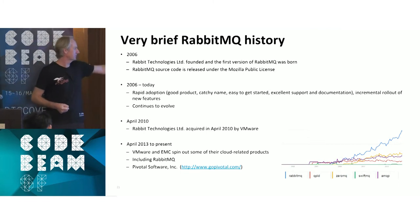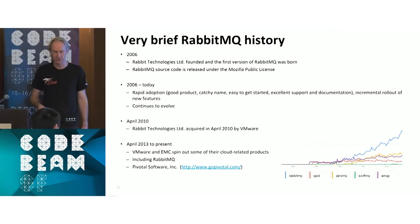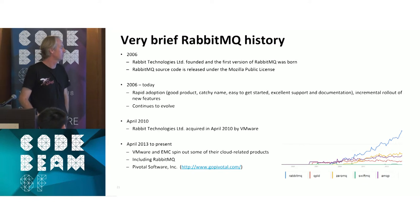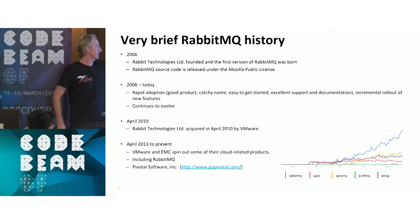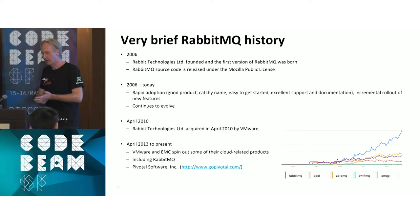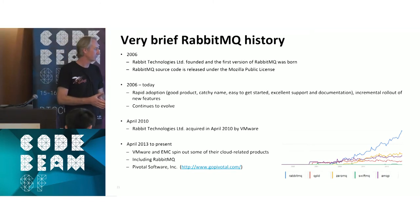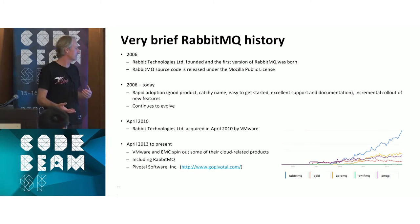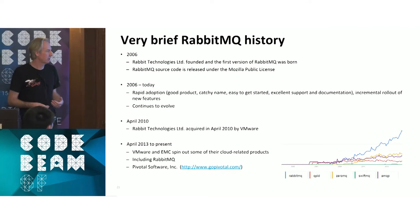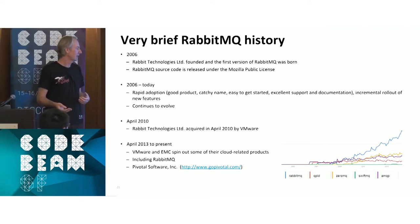Back in 2010 I had a phone call scheduled with Alexis at RabbitMQ. When I called there was a lot of noise and drunken hilarity in the background — the guys had just been acquired by VMware, which was quite a good thing for them. VMware subsequently in 2013 spun out a lot of their software products into a company called Pivotal, and Rabbit ended up there.